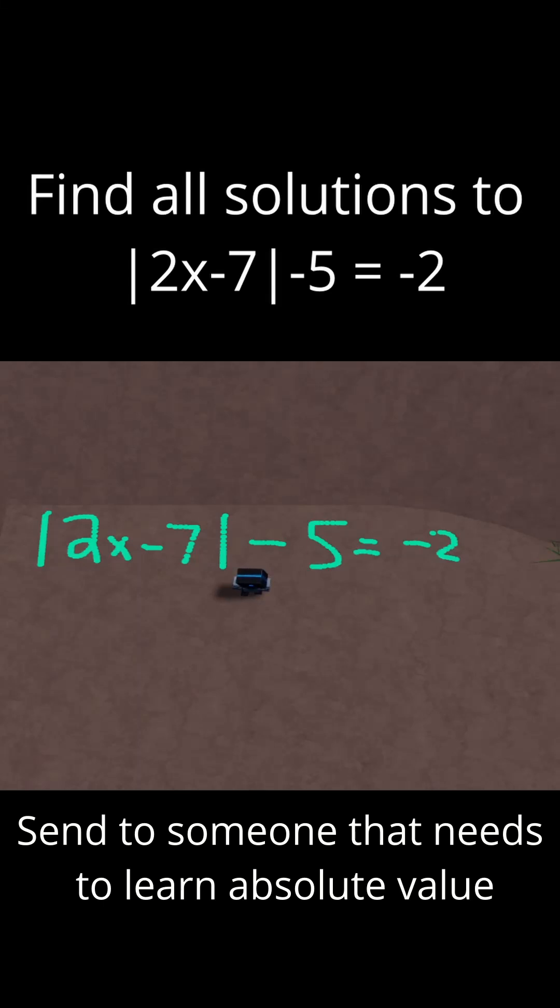Let's try solving this one now. It says the absolute value of 2x minus 7 minus 5 is equal to minus 2. So first step is to add 5 to both sides to isolate the absolute value. If I do that, I'll have 2x minus 7 in absolute value signs is equal to plus 3.